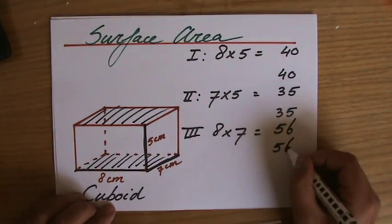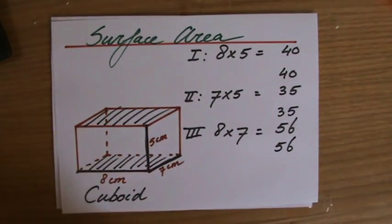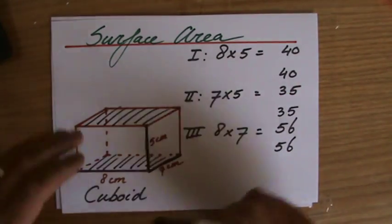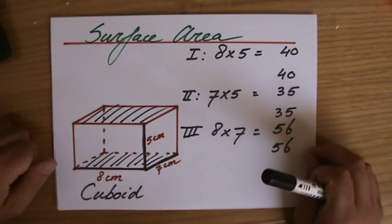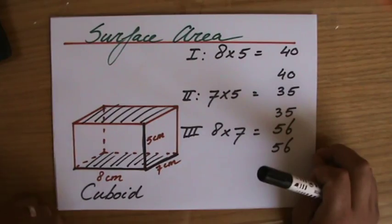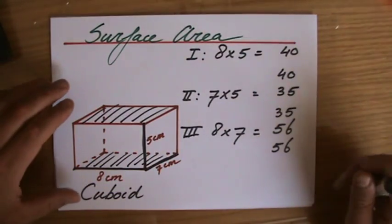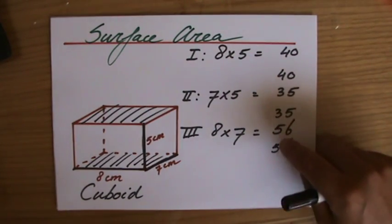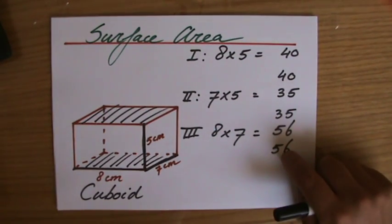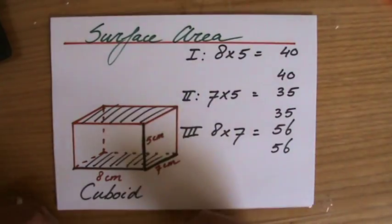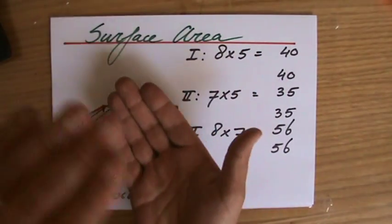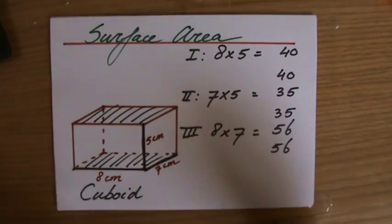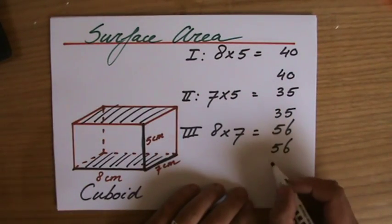Now why do I choose to write it down like this? Because I always check: did I forget one of the faces, did I forget one of the sides? Because that is a commonly made mistake unfortunately. And I have 1, 2, 3, 4, 5, 6 areas over here, and indeed cuboid has 1, 2, 3, 4, 5, 6 sides, six faces. So I didn't forget any one of them. I always check my work.